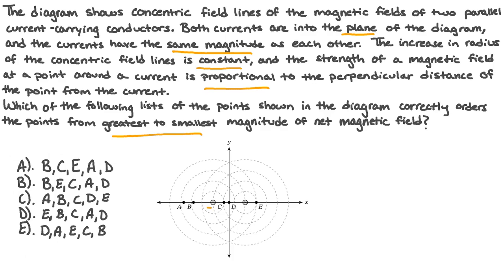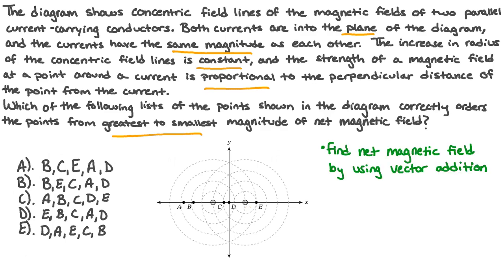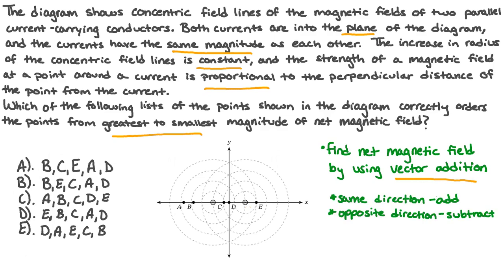On the diagram, we see the two wires set up on the x-axis along with the five points from A to E. The dotted circles around each wire represent the magnetic fields. To determine which points are greater and smaller in magnitude of net magnetic fields, we need to remember two things. First, when finding the net magnetic field, we need to use vector addition: if the magnetic field lines are pointing in the same direction at the same position, we will add the magnitudes together; and if they're pointing in the opposite direction, we will subtract the magnitudes.